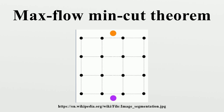Example: The figure on the right is a network having a value of flow of 7. The vertices in white and the vertices in gray form the subsets S and T of an S-T cut, whose cut set contains the dashed edges. Since the capacity of the S-T cut is 7, which equals the value of flow, the max-flow min-cut theorem tells us that the value of flow and the capacity of the S-T cut are both optimal in this network.